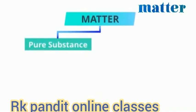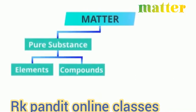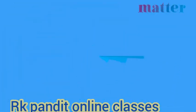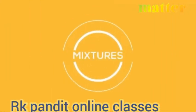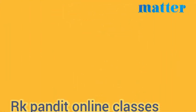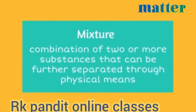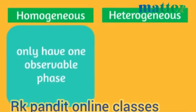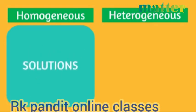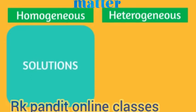Both elements and compounds are classified under pure substances. Although both salt and water are pure substances, when they combine together, the product is no longer a pure substance — it now becomes a mixture. A mixture is a combination of two or more substances that can be further separated through physical means. Mixtures can be classified as homogeneous or heterogeneous. Homogeneous mixtures only have one observable phase. Solutions are homogeneous mixtures because in them, the solute is completely dissolved in a solvent, leaving no trace of other states of matter.